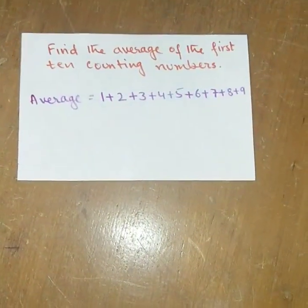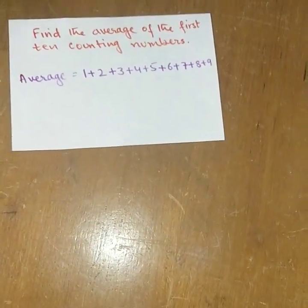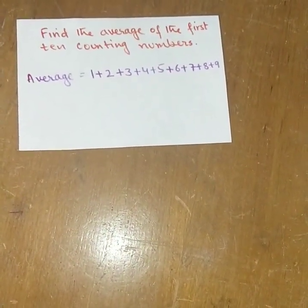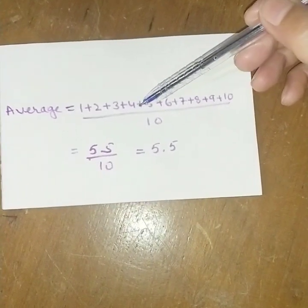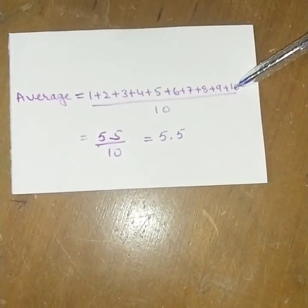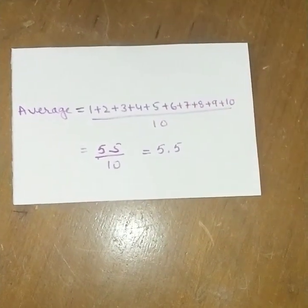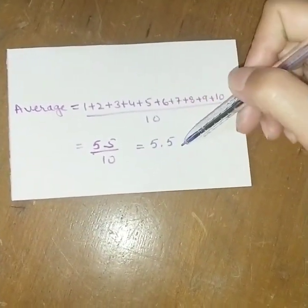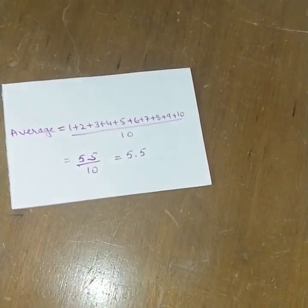The next question: find the average of the first ten counting numbers. The first ten counting numbers are one through ten. So we calculate: 1 plus 2 plus 3 plus 4 plus 5 plus 6 plus 7 plus 8 plus 9 plus 10, which gives 55. Dividing 55 by 10 gives 5.5.